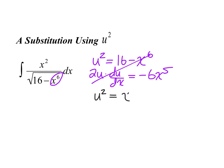Instead of that, let u squared equal x to the sixth. The benefit of doing this is that I can actually take the square root of both sides — previously I wouldn't be able to. That's how you determine how you should define your u squared, because with the earlier approach things got out of hand. Here I can simply take the square root of both sides and get u equals x cubed.